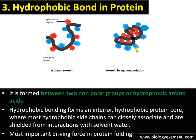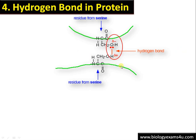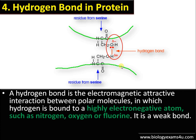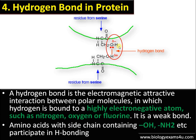This hydrophobic interaction is one of the most important forces responsible for protein folding. The fourth bond is the hydrogen bond in protein. A hydrogen bond is a comparatively weak bond in which hydrogen is bound to a highly electronegative atom like oxygen, nitrogen, or fluorine — an electromagnetic attractive interaction between polar molecules. Amino acids with hydroxyl side chains like serine and threonine, or amino groups like lysine and arginine, can participate in hydrogen bonds such as H–O or H–N bonds.